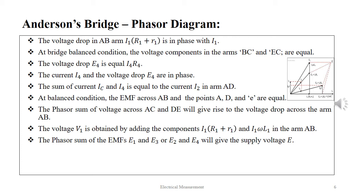The sum of current IC and I4 is equal to the current I2 in the arm AD. At balanced condition the EMF across AB and the points A, D and E are equal.